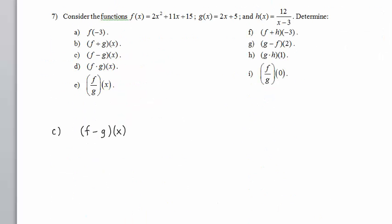In Part C, we have F minus G of X. This means F of X minus G of X. F of X is this expression here. Then we have a minus sign. G of X is this expression here.